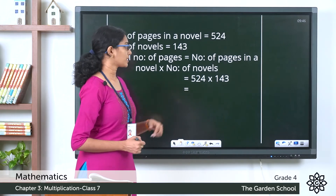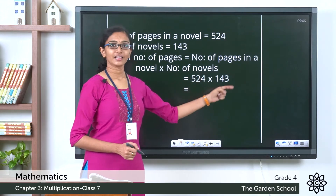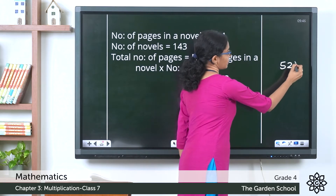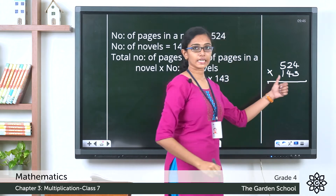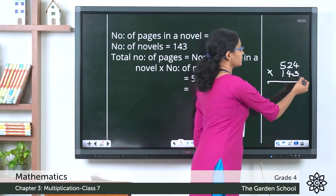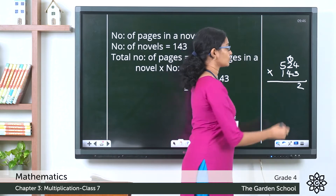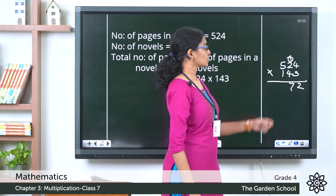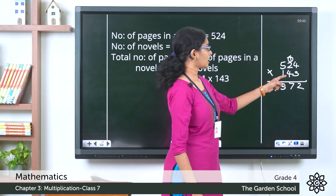Let's substitute the data: total pages = 524 × 143. We do the multiplication in the working column. Starting with the ones digit: 3 × 4 = 12, carry over 1; 3 × 2 = 6, plus 1 = 7; 3 × 5 = 15. So the first partial product is 1,572. Then for the tens digit, put a zero at the end.